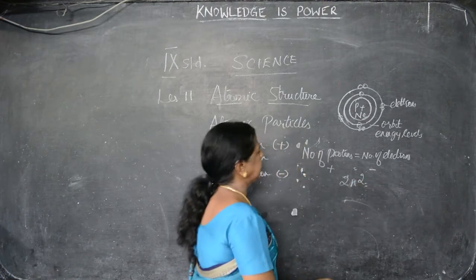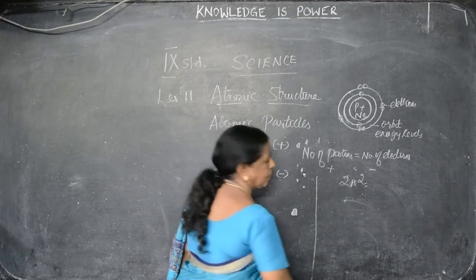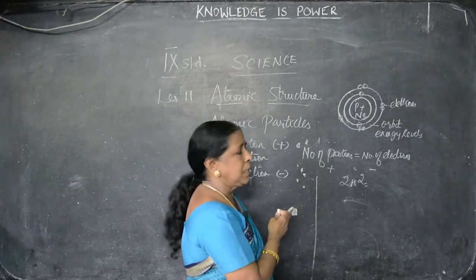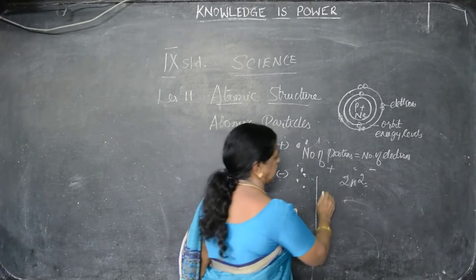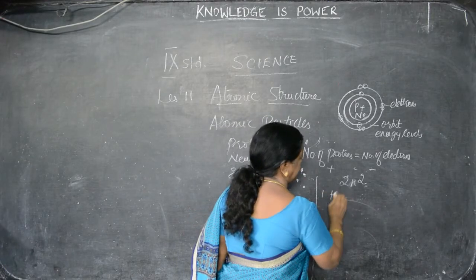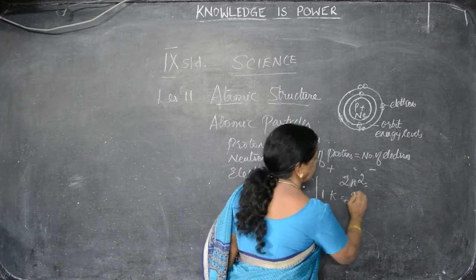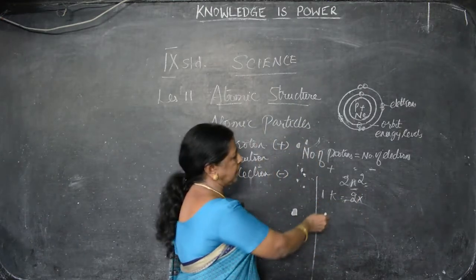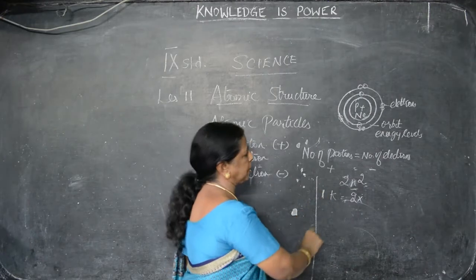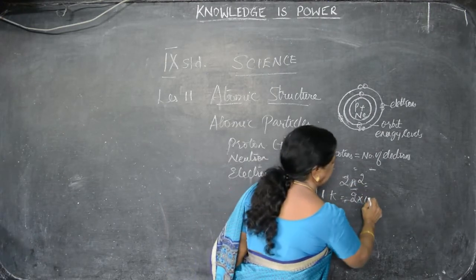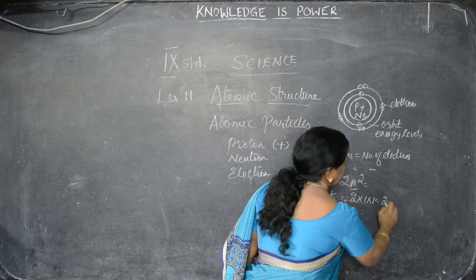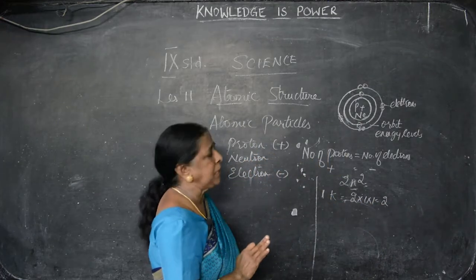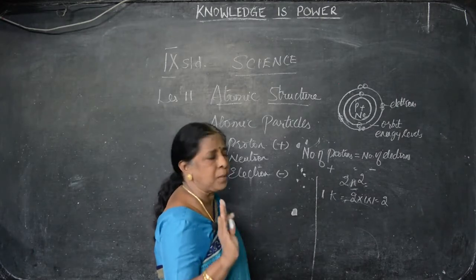In the formula 2n², the 2 is the constant number and n represents the orbit number. For example, the first orbit is otherwise known as K orbit. So for K orbit, n = 1, so n² = 1×1 = 1, and 2×1 = 2. So in the first orbit, the K orbit, we can arrange only 2 electrons, not more than that.